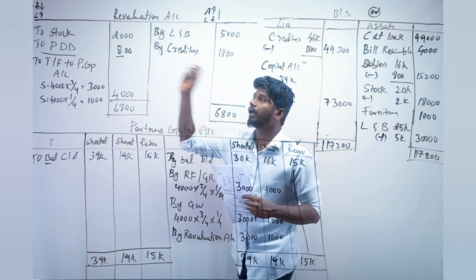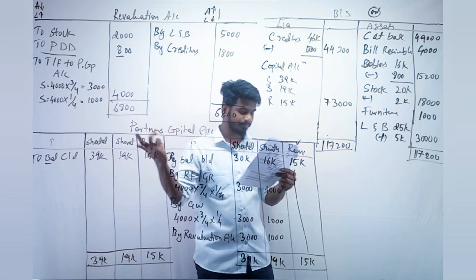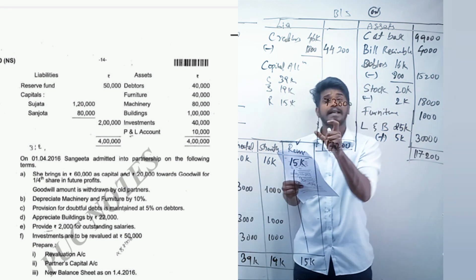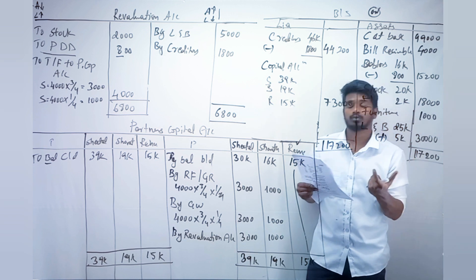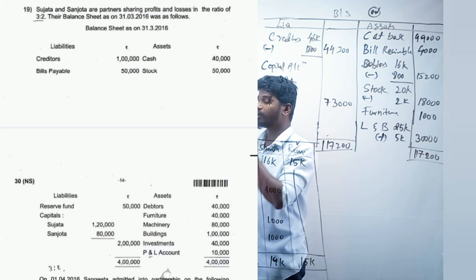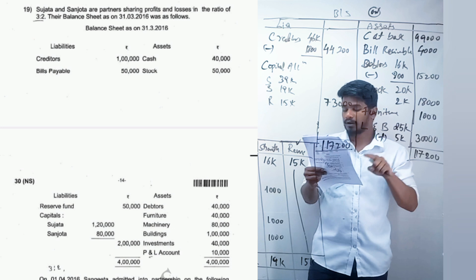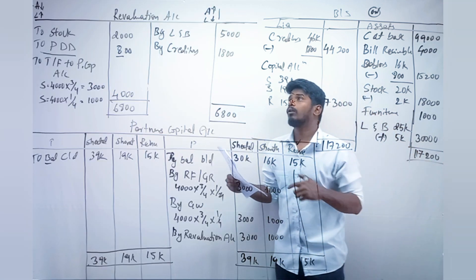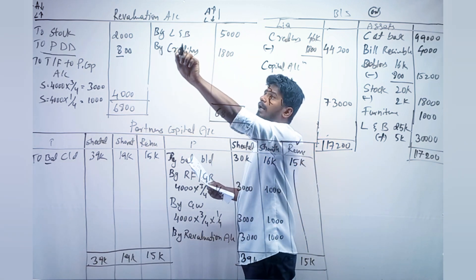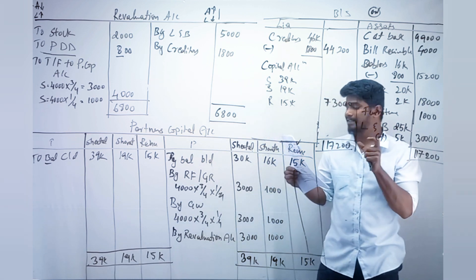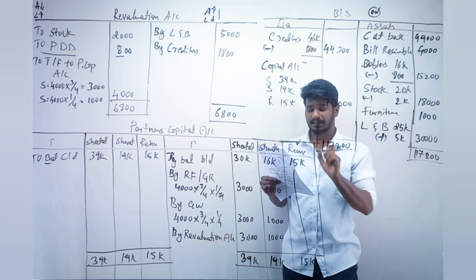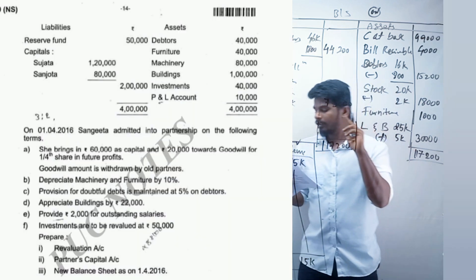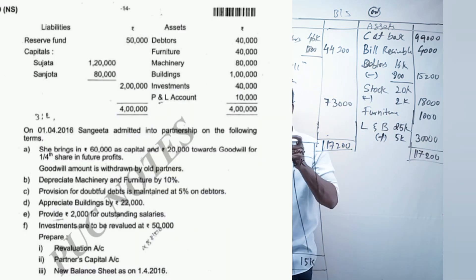For point C, provision for doubtful debts always goes on the debit side of the revaluation account. Next, point D: appreciate building by 22,000. The value of building in the balance sheet is 1 lakh. Since the asset is increasing by 22,000, we record it on the credit side.